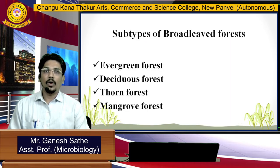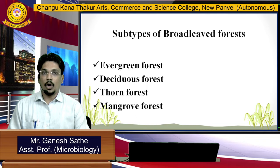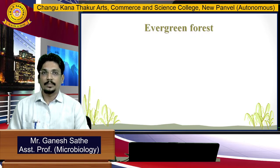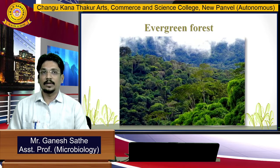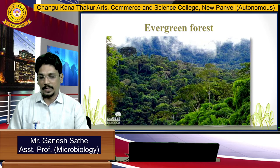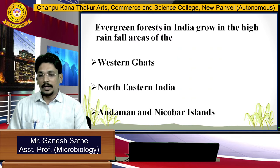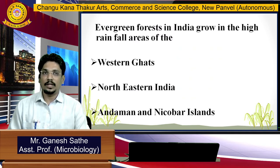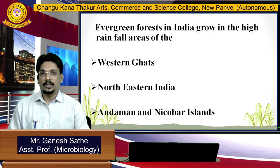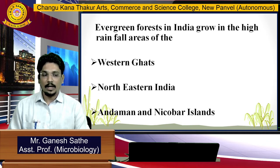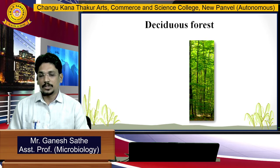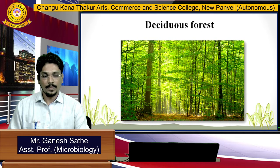Broad-leaved forests also have sub-types: evergreen forest, deciduous forest, thorn forest, and mangrove forest. This is an image of evergreen forest from the Amazon. In India, evergreen forests grow in high rainfall areas, especially in the Western Ghats, northeastern India, and the Andaman and Nicobar Islands.